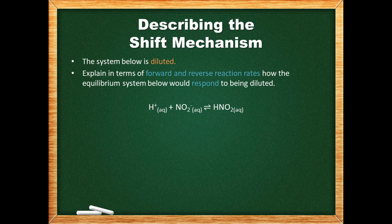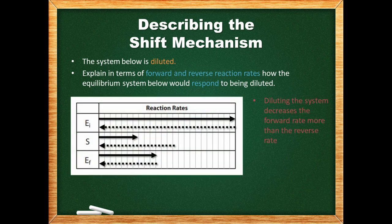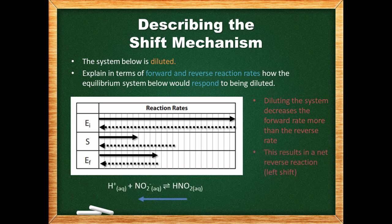This is a continuation of the nitrous acid problem. We are asked to explain in terms of the forward and reverse reaction rates how the equilibrium system would respond to being diluted. Diluting is going to decrease both the forward and reverse rate, but the forward rate will decrease more than the reverse rate. The result of this will be a net reverse reaction, also known as a left shift.